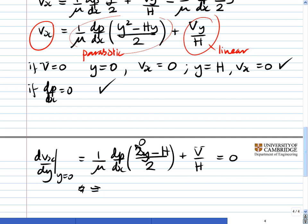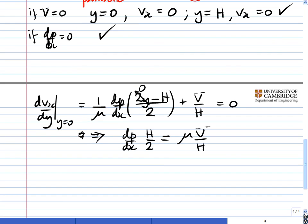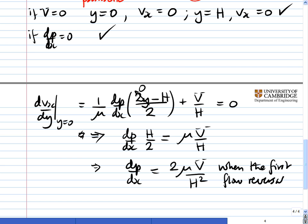And that's all equal to 0 at the case that we're looking at. Taking the V/h to the other side gives us a minus, but it cancels with that minus there. We're going to get that h/2 = μV/h × (1/(dp/dx)). So that implies that dp/dx = 2μV/h² when the first bit of fluid reverses, when the first flow reversal occurs.